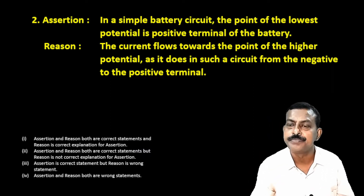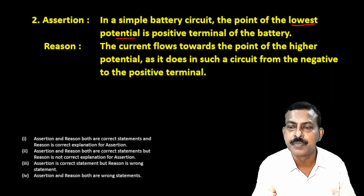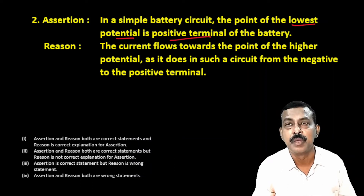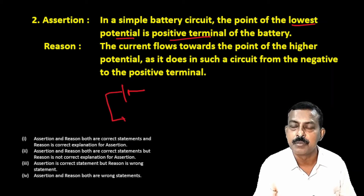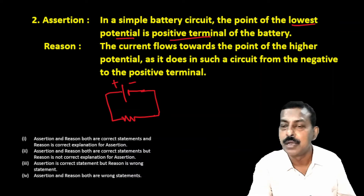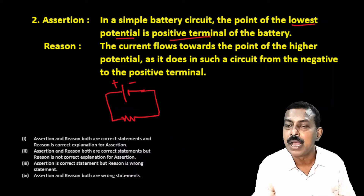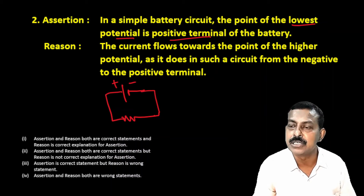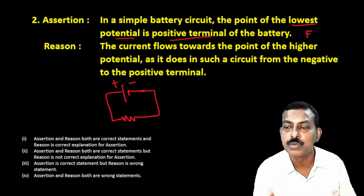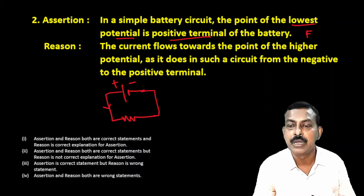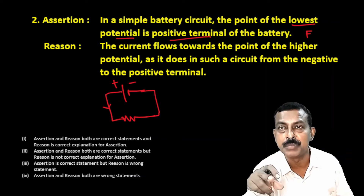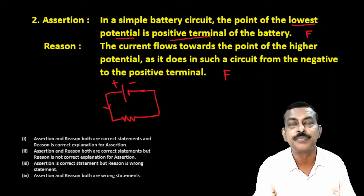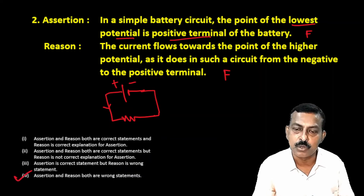The assertion is false — the positive terminal is considered the point of higher potential. Positive charge moves from higher to lower potential, which is also the direction of conventional current. So saying the positive terminal is the point of lowest potential is false. The reason states: current flows toward the point of higher potential, as it does from the negative to the positive terminal. This is also false — conventional current flows from the positive terminal to the negative terminal through the external circuit. Since both assertion and reason are false, the fourth option is correct.